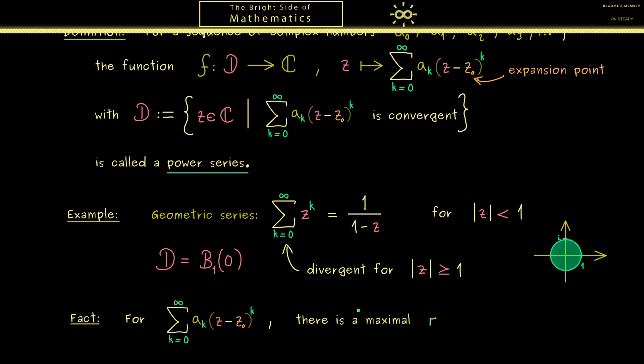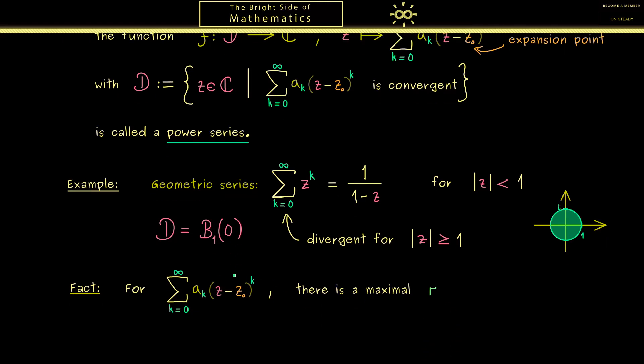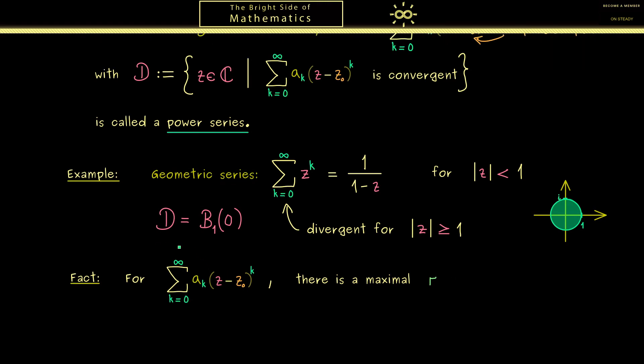Or to say it more concretely the open ball with radius r lies completely in D. So you see the only difference from before is that we don't need equality and also the middle point should be z_0 now.